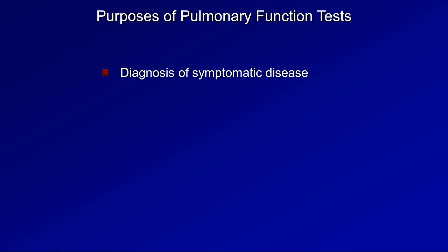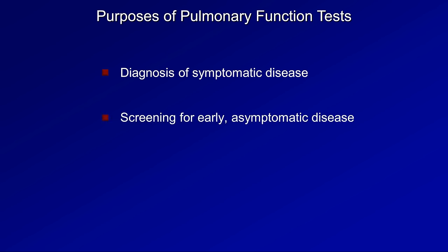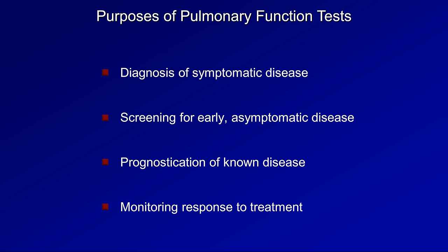However, PFTs can also be used to screen for early asymptomatic disease in patients at high risk — for example, patients on long-term amiodarone, which has significant pulmonary toxicity. PFTs can also be used for prognostication of known disease. Along similar lines, they can be used to estimate surgical risk and likelihood of favorable outcome in some specific circumstances, such as lung resection in patients with COPD. Finally, they can also be used to monitor response to treatment, though most pulmonary diseases are best monitored by symptoms.